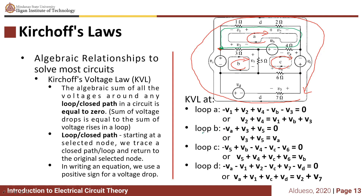Applying KVL at loop B, starting with this node: negative VB plus V3 plus V5 equals zero.